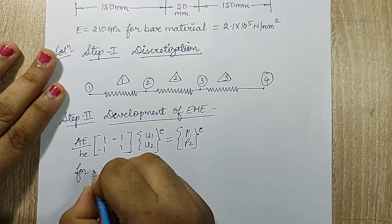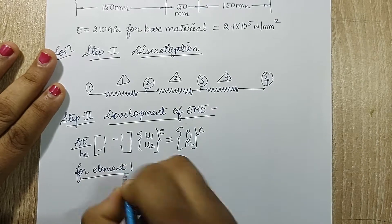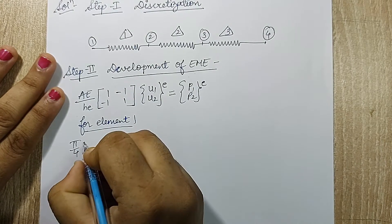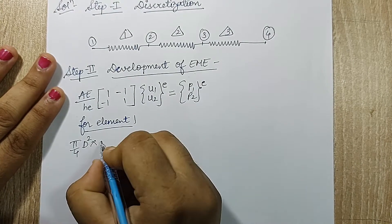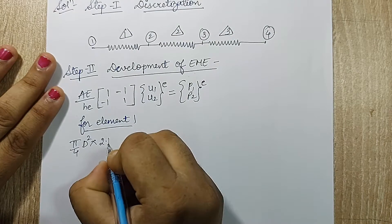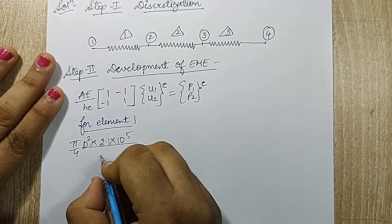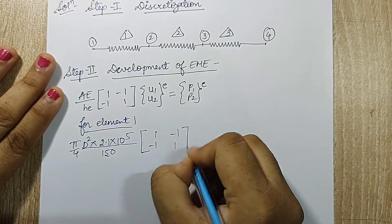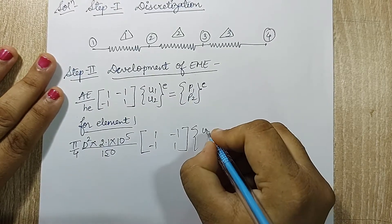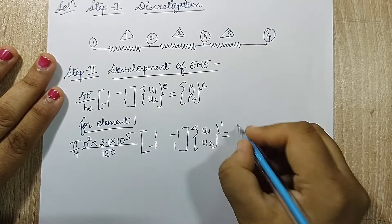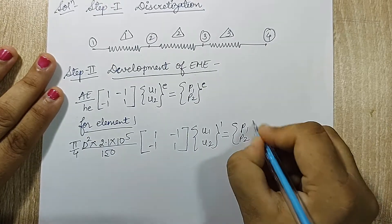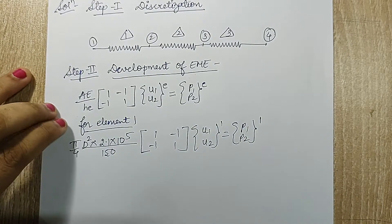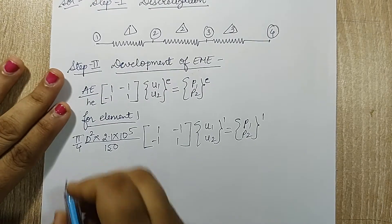For element 1, the area will be (π/4)D². The value of E is 2.1 × 10⁵ and h1 is 150. The matrix is [1 -1; -1 1] with {u1; u2}¹ = {p1; p2}¹. Capital D is given as 60 mm. When I solve this I get the value as 10³ outside.